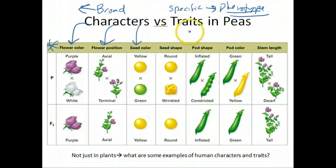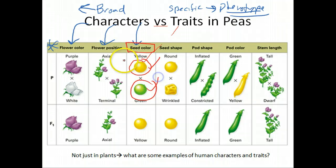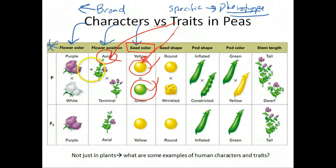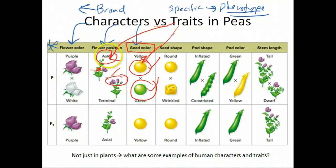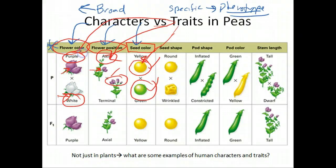Traits are specific. For seed color, traits are yellow and green — so under the character of seed color you can have the yellow trait or the green trait. For flower position, you can be axial, meaning flowers are found in the middle of the plant, or terminal, meaning flowers are at the end. For flower petal color, traits are purple and white — so the specific phenotype is purple in one case and white in the other, under the broad character of flower color.